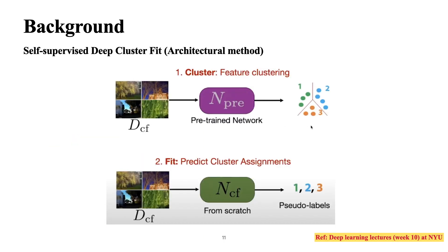In the architectural method, one example is the deep clustering method. The goal is to predict labels. We take a pre-trained model — which can be trained on jigsaw puzzles, rotation prediction, or anything — and apply k-means clustering to get cluster labels. We use these cluster labels to train a new network from scratch. Empirically, this generalizes the model well and gives better results.